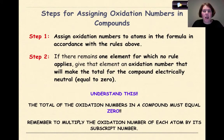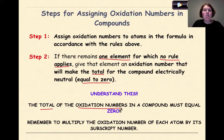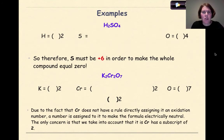Now let's look at steps for assigning oxidation numbers in compounds. Step 1: assign oxidation numbers to atoms according to the rules — identify Group 1 as plus 1, Group 2 as plus 2, fluorine as minus 1, and so on, starting with elements whose charges you're sure of. If one element remains for which no rule applies, give it an oxidation number that makes the total for the compound electrically neutral — equal to 0. Remember to multiply the oxidation number of each atom by its subscript number.